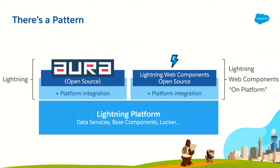We are following a pattern — this is not really new. The rise of Lightning Web Components is pretty similar to what we have with Lightning Components, known as Aura. The idea is that we have an open source framework that is available everywhere, and we have a middle layer of platform integration that ties it very well with the Salesforce platform. If you take aside this platform integration layer, you have the open source framework that you can build out of the platform. The idea with the platform integration is that you get access to a whole range of services that you don't have to reimplement — things like the data service, the base components, or security like Locker Service.